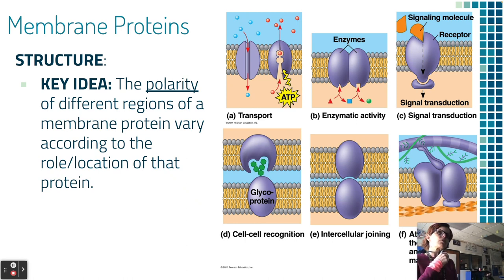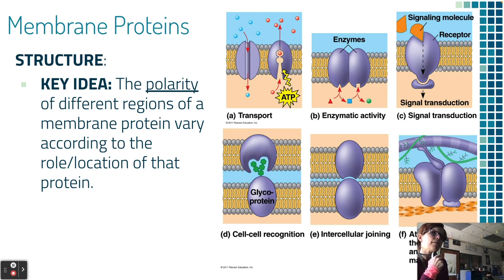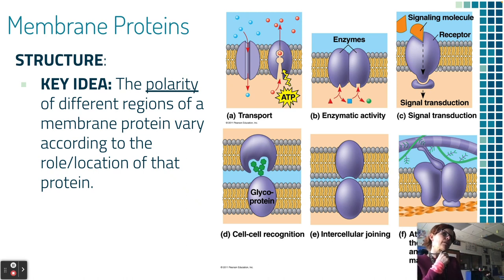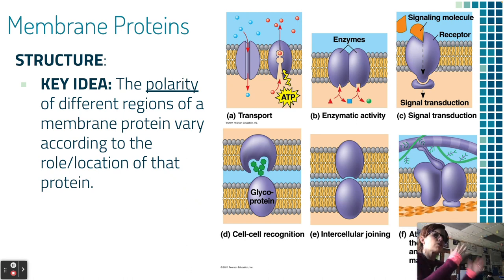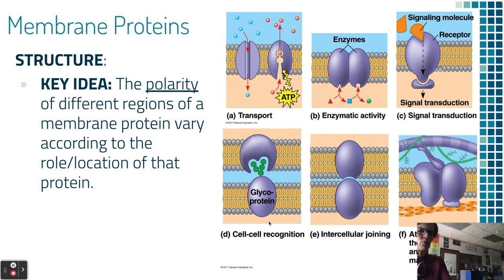Membrane proteins have different roles depending on their location. Transport proteins can transport large molecules across — if it's active transport, it always requires ATP. Enzymes can be embedded in the cell membrane, putting molecules together or breaking them apart. Receptors take ligands and transfer a message to the inside when their shape changes. Some proteins are for identification — when a white blood cell touches a cell, it needs to recognize it; if foreign, it'll attack. Some proteins join cells together, and some are attached to the ECM to lock the cell membrane in position.